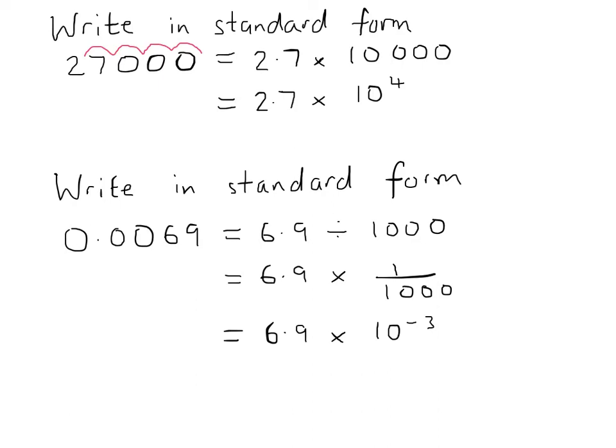You can spot that it is 10 to the power minus 3 again by looking at the original number and seeing how it moves in relation to the decimal point. There are 1, 2, 3 jumps, giving 10 to the power minus 3.